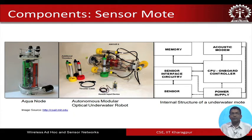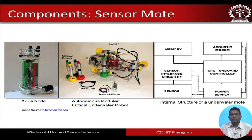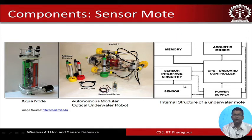On the left-hand side is a pictorial view of an underwater sensor node called the Aqua Node — a particular type of underwater sensor node. These kinds of nodes can be used for interconnecting and forming an underwater sensor network. In an Aqua Node, or any other underwater sensor node, we have similar components as in terrestrial sensor nodes: a sensor component, sensor interface circuitry, an onboard CPU controller, a power supply, an acoustic modem — the modem here is an acoustic modem — and a memory unit.